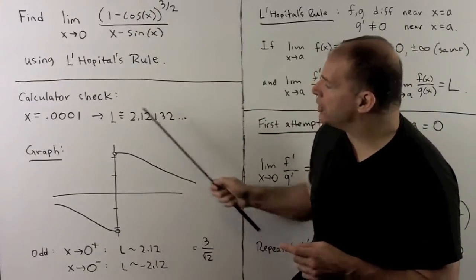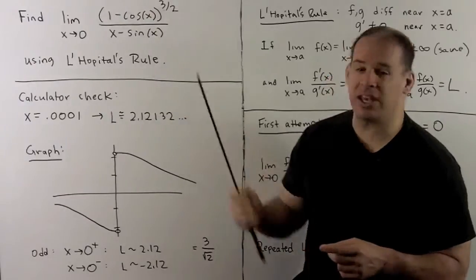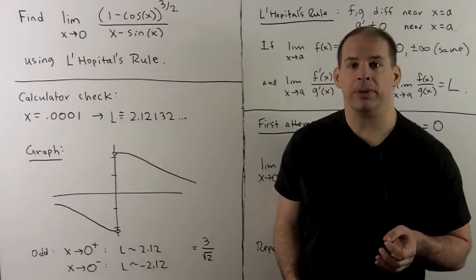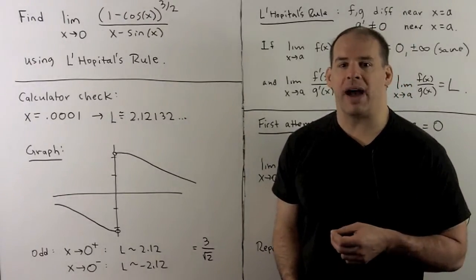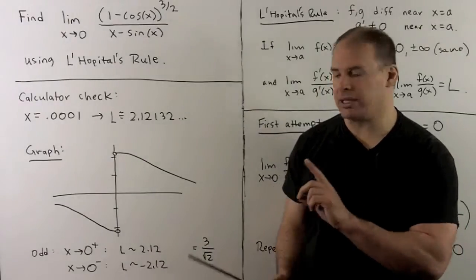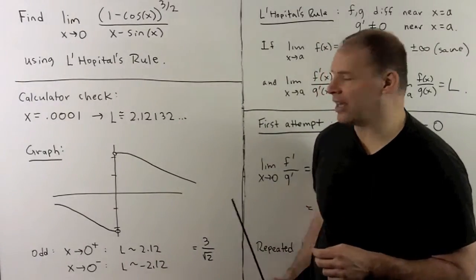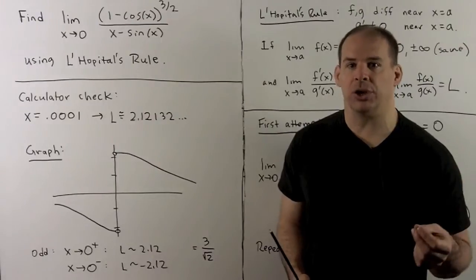Now, the strict answer to our question is the limit does not exist as a two-sided limit. So we're going to use L'Hôpital's rule to find the limit coming in from the right. Punchline is, that limit is 3 over square root of 2.